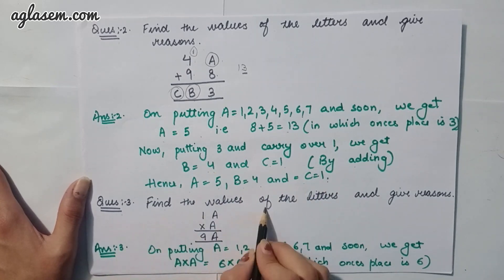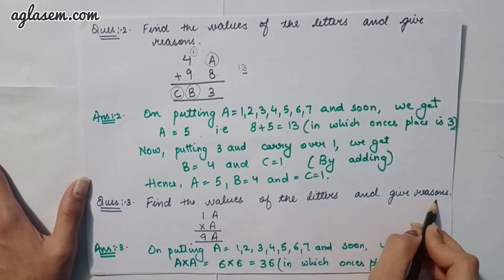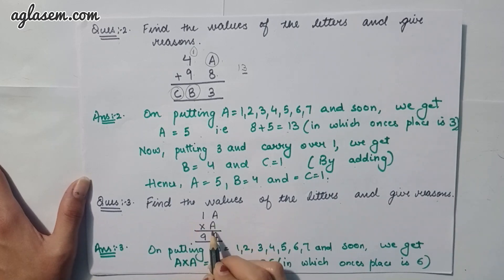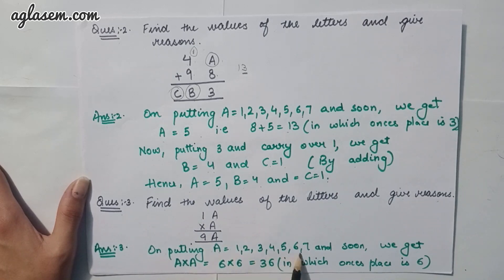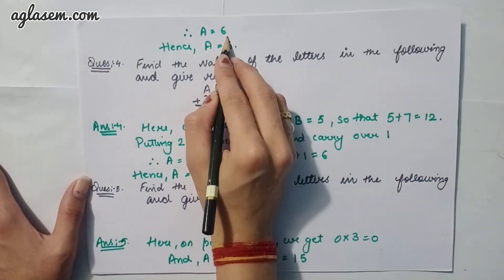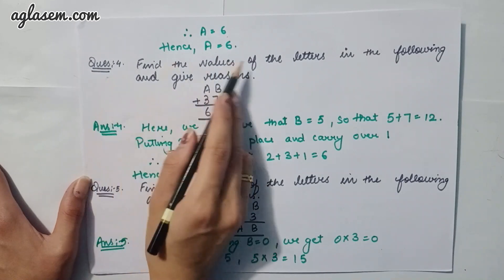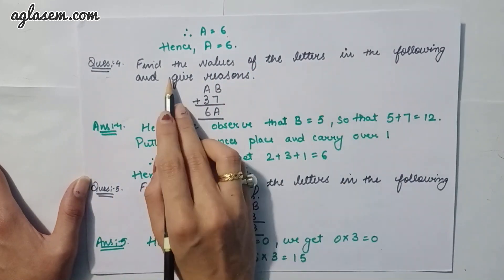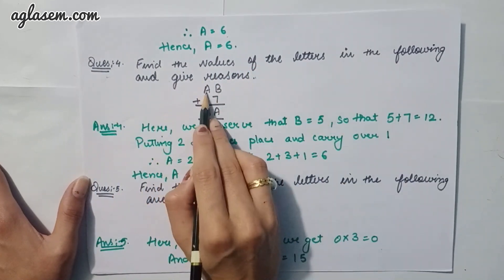Moving to the third question: find the value of the letters and give reasons. The problem is 1A × A = 9A. On putting A as 1, 2, 3, and so on, we try A = 6: 6 × 6 = 36, whose ones place is 6. Therefore A = 6.